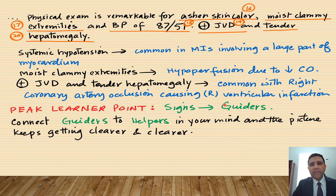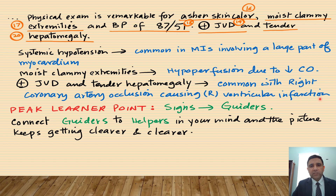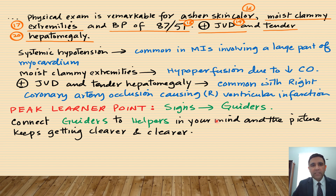When the right ventricle gets infarcted, it causes increased pressure in the right atrium, and both the superior and inferior vena cava drain into the right atrium. As pressure builds up, back pressure is transmitted to peripheral areas — the inferior vena cava drains blood from the liver, so you get hepatomegaly, and JVD results from increased back pressure in the superior vena cava. The peak learner point: symptoms are guiders, signs are also guiders. Connect the guiders to helpers in your mind, and the picture keeps getting clearer and clearer.